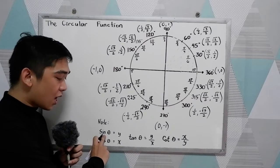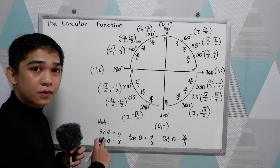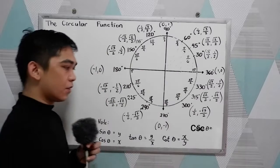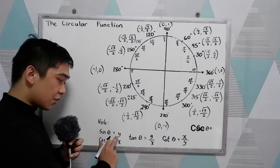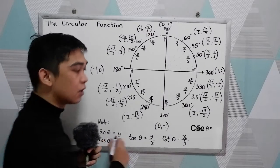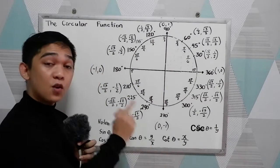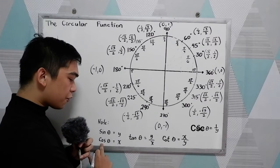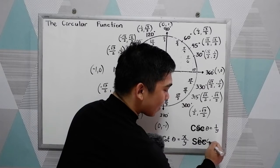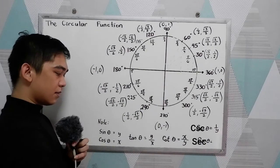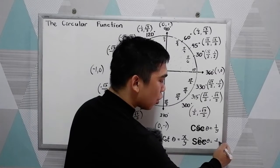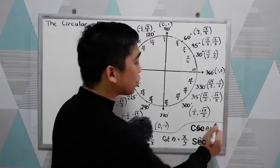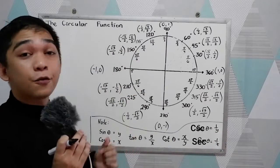Now, what is the reciprocal of sine θ? That is cosecant, the reciprocal of sine θ, and the reciprocal of y is 1 over y. Again, y must not be equal to zero. The reciprocal of cosine θ is secant, and the reciprocal of x is 1 over x. So these are the six trigonometric functions that we are going to use in our circular functions.